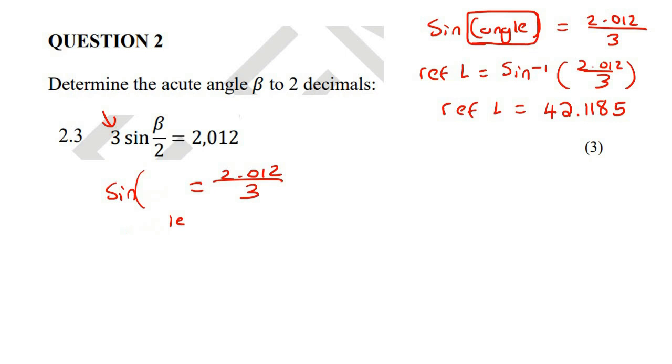So that means that this part is the angle. So we can say that beta over two is the angle, which is 42.1185. Now you just got to get beta by itself. So you could do that by taking the two to the other side. And that would end up giving you 42.1185 multiplied by two. And that would be to two decimal places, 84.24 degrees.